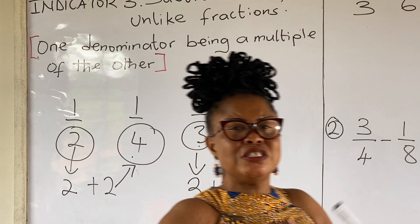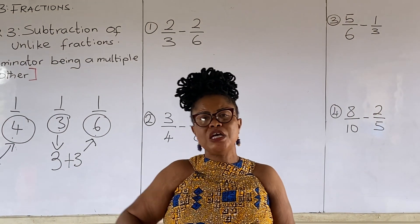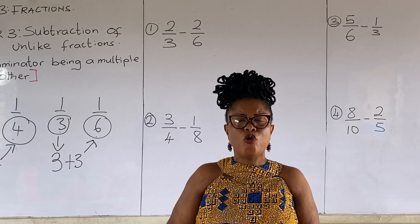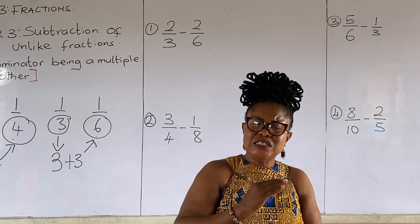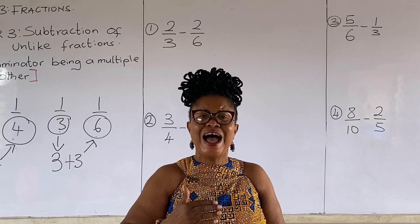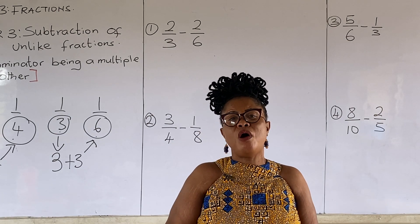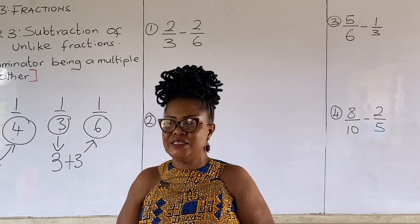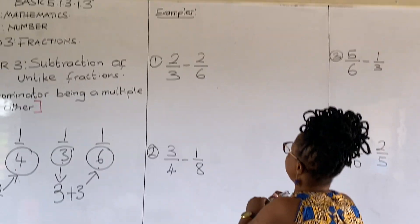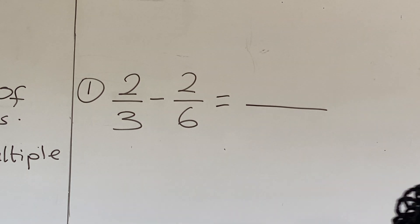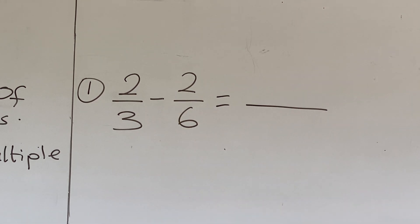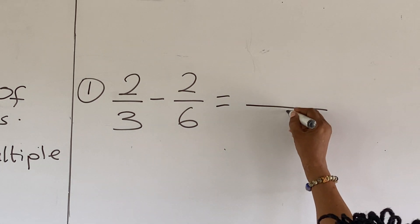So we are going to subtract where one denominator is a multiple of the other. The LCM we are going to use, because one denominator is a multiple of the other, is the bigger number which is a multiple of the smaller number — our LCM or least common denominator. Let's look at example one: the fraction here is two thirds minus two sixths.